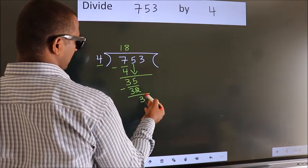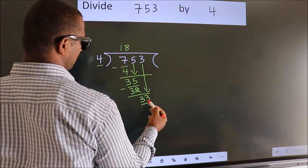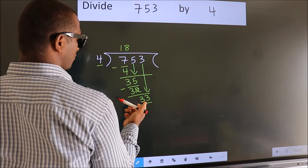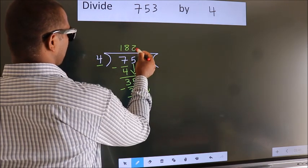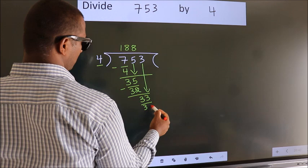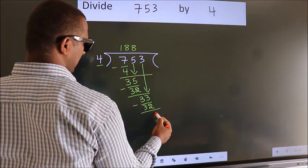After this bring down the beside number. So 3 down. So 33. A number close to 33 in 4 table is 4, 8, 32. Now we subtract. We get 1.